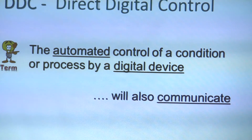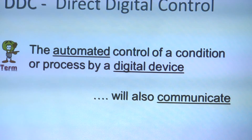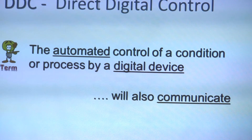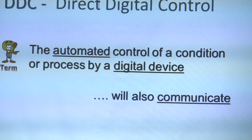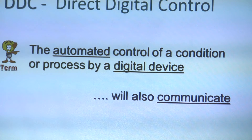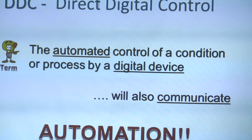I like to add that DDC will also communicate. A few years back, there wasn't a front end and a Jace and stuff like that to tie everything together, so things didn't communicate but they were still doing DDC. These days, if you're going to do DDC, it's going to communicate. Once you have those three things in place — automated, digital device, and communication — you're doing automation.